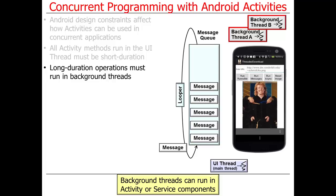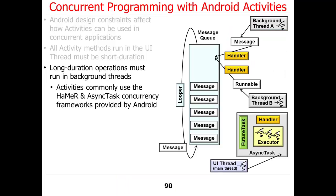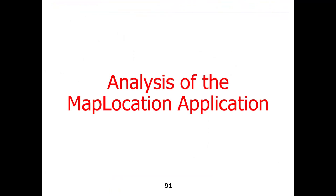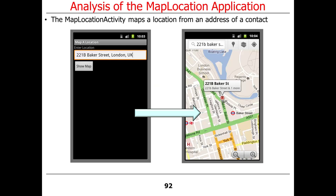Background threads can run in either Android activities or services. The two common approaches for handling concurrency in Android are the Handler framework and the AsyncTask framework. The Handler framework requires you to know a little bit about Java threading. The AsyncTask framework requires you to know nothing about Java threading unless you choose to. If you want a head start, assignment three's index.html has links to videos on this topic.